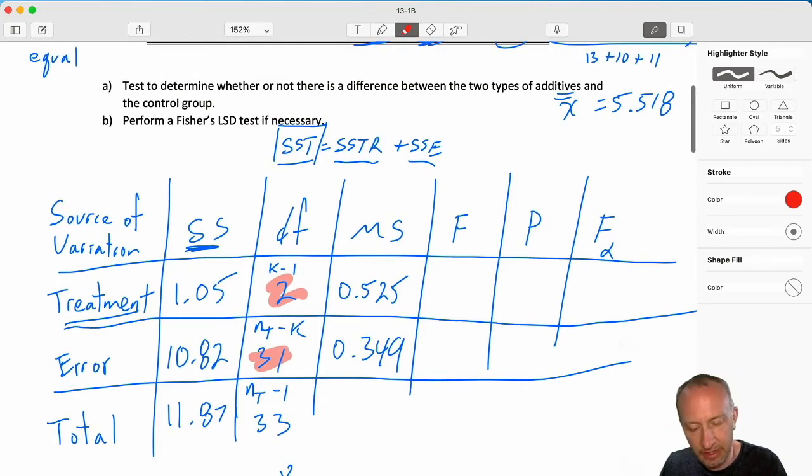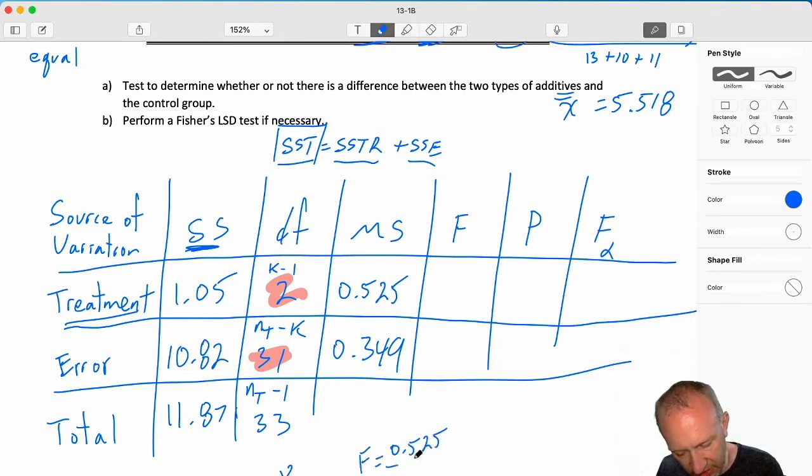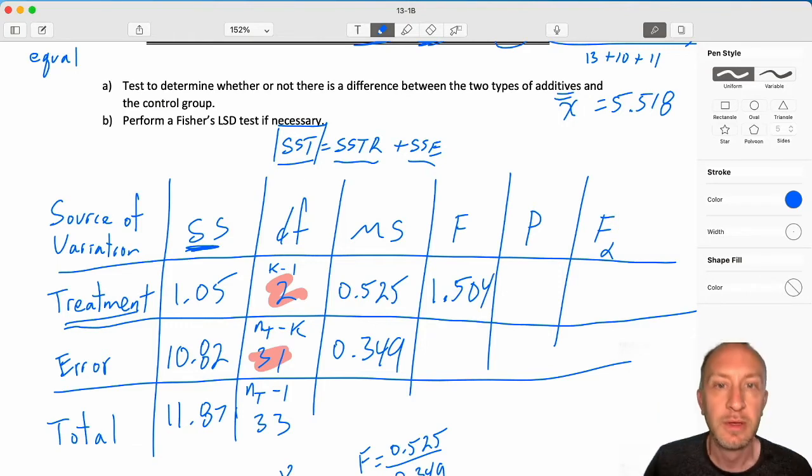Next, our test statistic. So that F is just 0.525 over 0.349, always MSTR over MSE. 0.525 over 0.349. That gives me an FST of 1.504. Okay, no problem.